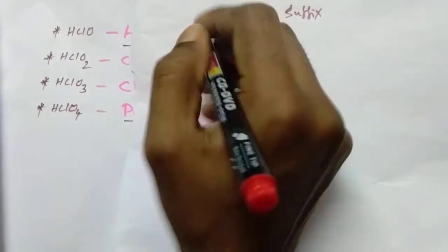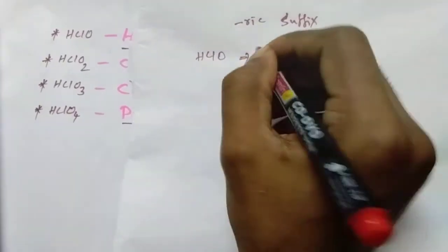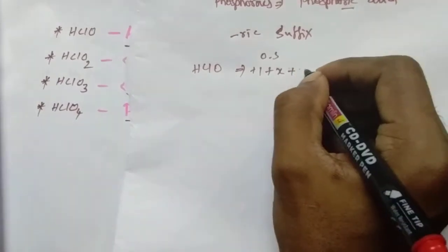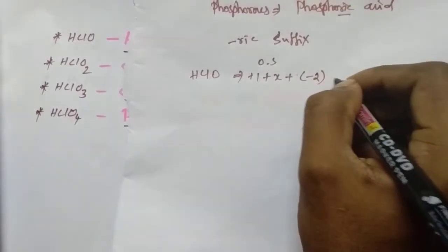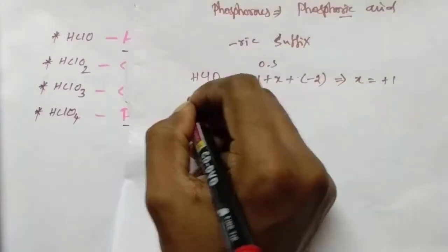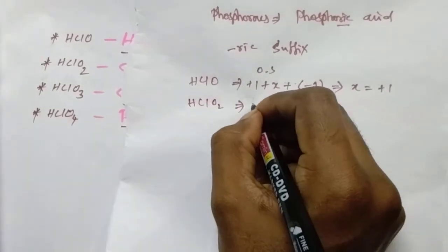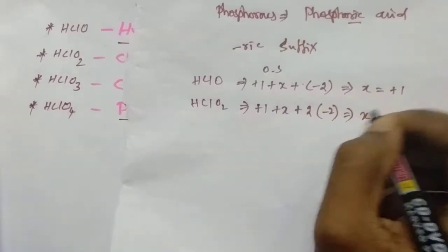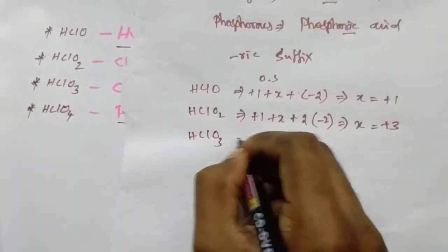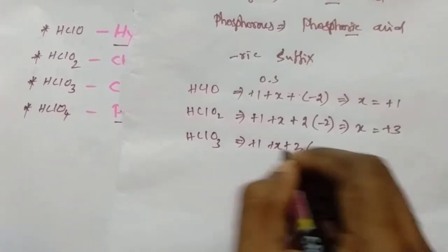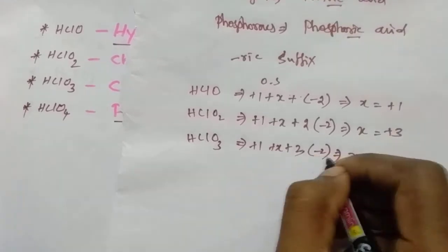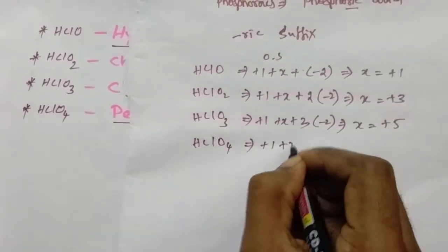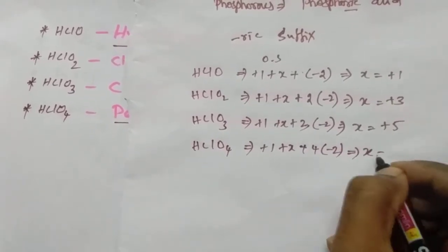Let us begin with the Chlorine Oxy Acids. For HClO: hydrogen is +1, chlorine is X, one oxygen is −2, so X equals +1. For HClO2: +1 + X + 2×(−2) = 0, so X equals +3. For HClO3: +1 + X + 3×(−2) = 0, so X equals +5. For HClO4: +1 + X + 4×(−2) = 0, so X equals +7.